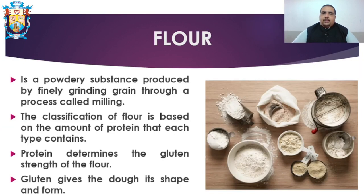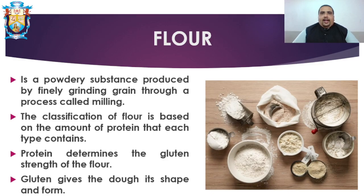The first ingredient we are going to discuss today is flour. Flour is a powdery substance produced by finely grinding grains through a process called milling. The classification of flour is based on the amount of protein that each type contains. Flour is made from wheat, rye, or any of the grains that are milled — meaning dried and then converted into a powder.